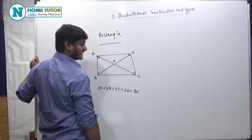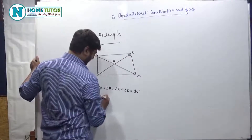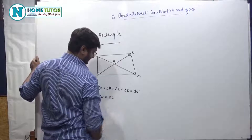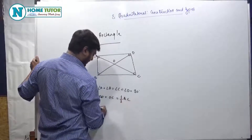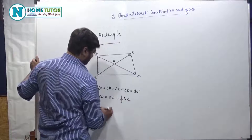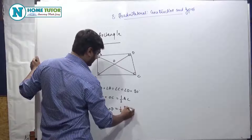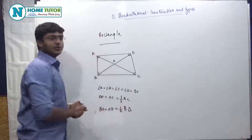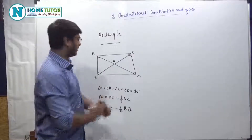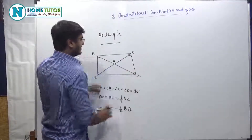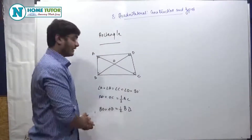Diagonals bisect each other — diagonals bisect each other का मतलब है दोनों equal parts में divide करते हैं, मतलब कि AO = OC = half of AC, and BO = OD = half of BD. यह बहुत basic properties of quadrilateral हैं. AB = DC and AD = BC — opposite sides of a rectangle are same.